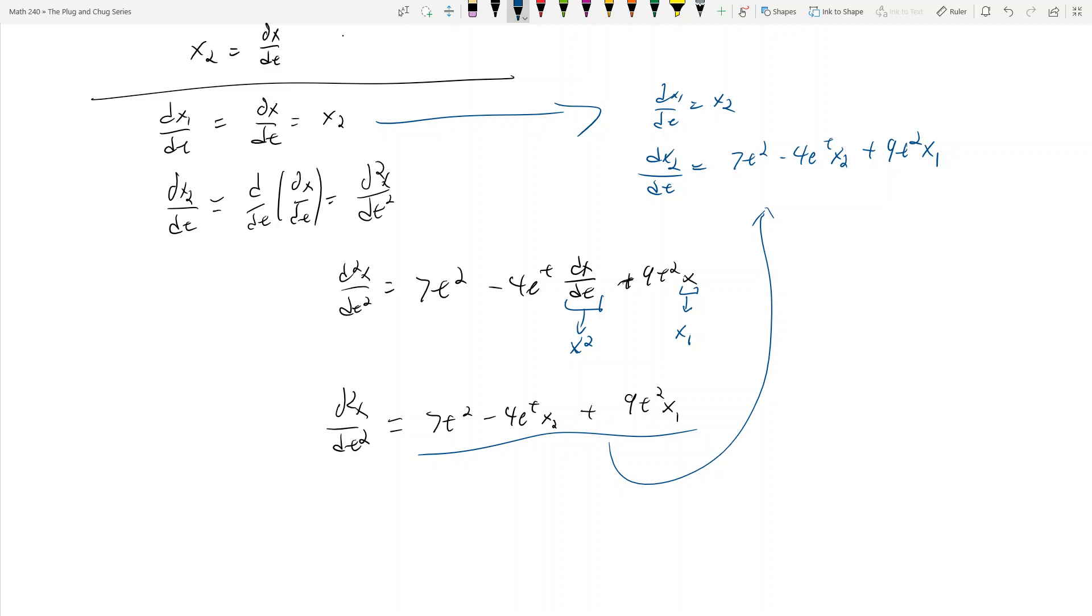Alright, and yeah, this is how you do it. You can actually write this now and throw this into a coefficient matrix. But not quite, because this ends up being as a coefficient matrix you'll have 0, 1, and then 9t squared, negative 4e to the t, times x1, x2. So if you multiply that out you'll get this, but you'll also need to add on 0 and 7t squared. And so this would be x1 prime, x2 prime equals...